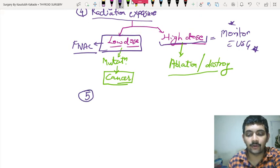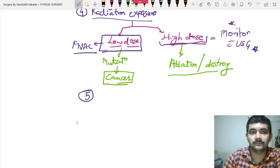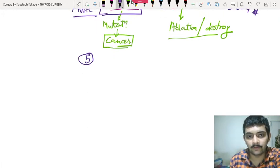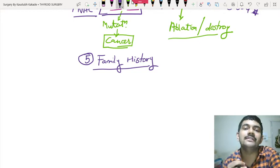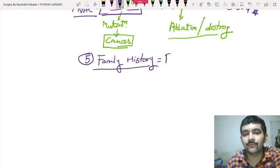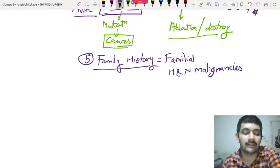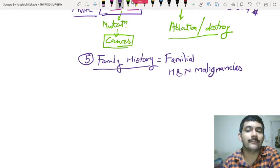The fifth indication you need to understand is family history. The simple reason is that it is associated with familial head and neck malignancies — conditions which are generally familial.